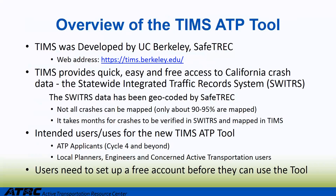The SWITRS data is not geocoded. What TIMS does is take the SWITRS data, geocode it, and incorporate it into the TIMS database system. In this process, not all crashes can be geocoded or mapped. It's also important to note that when a crash happens, it may take several months for the crash to show up in SWITRS and then also in the TIMS tool. The intended users of this new tool are applicants for ATP Cycle 4 and, more importantly, any local agency planner, engineer, or local community member interested in active transportation. First-time users need to set up a free account, which is a quick and easy process that takes about five minutes.